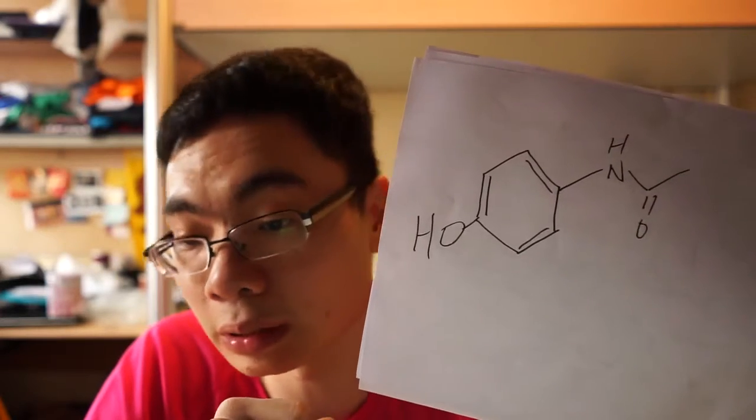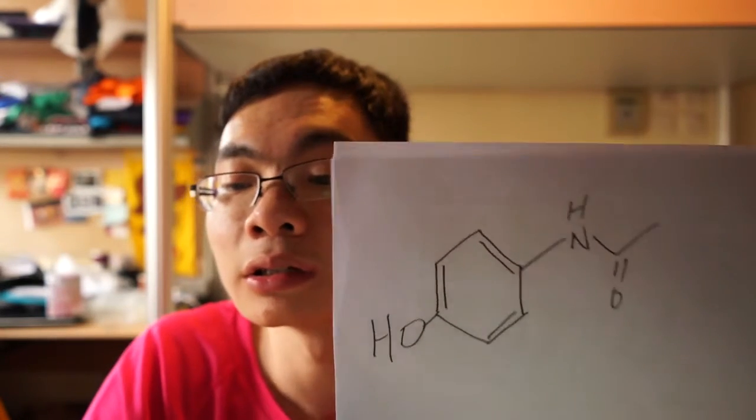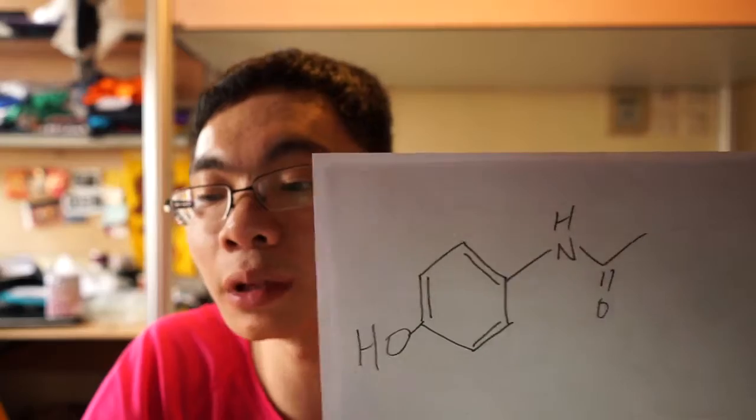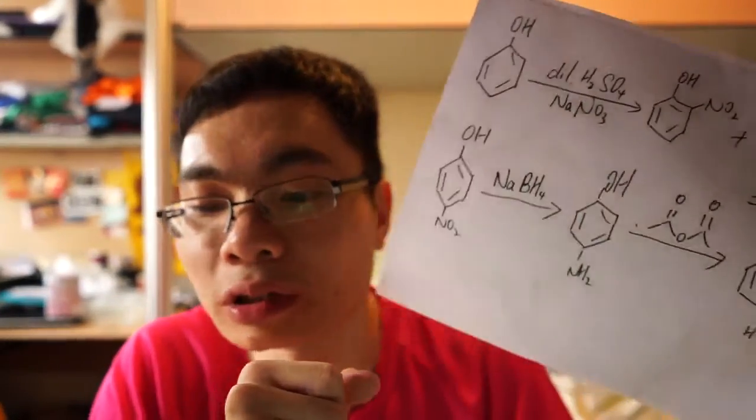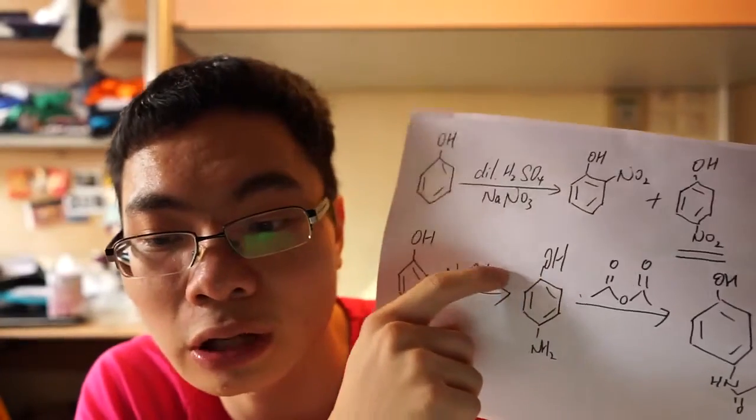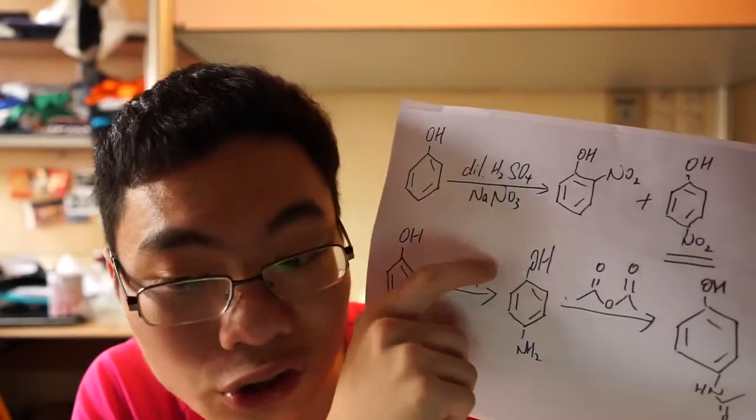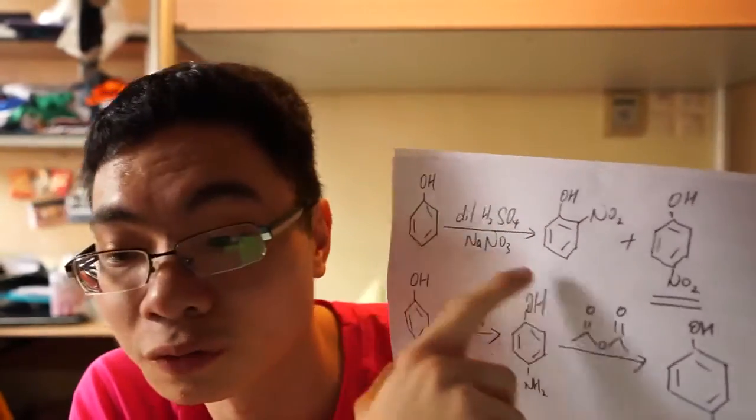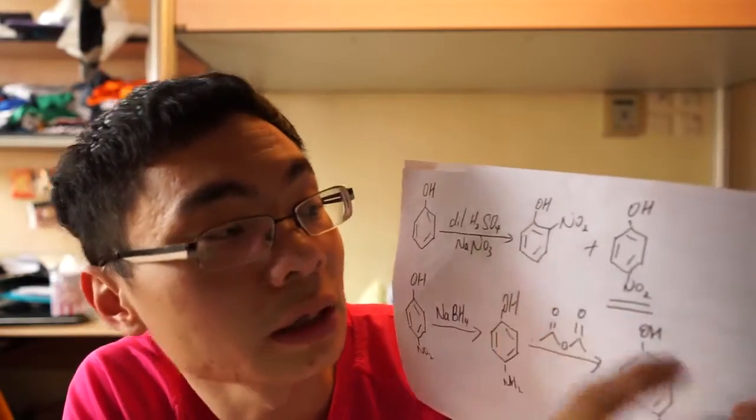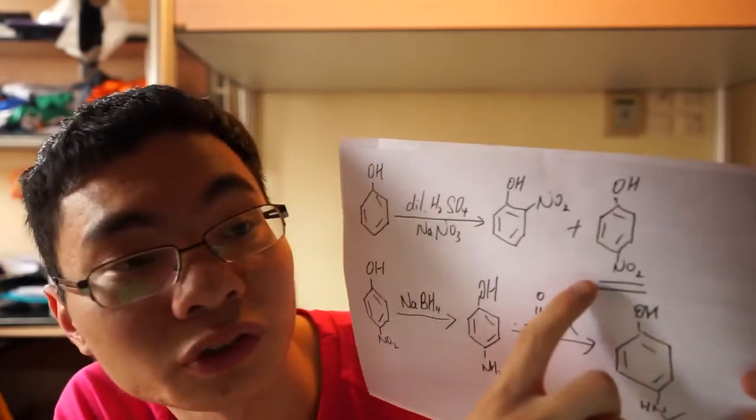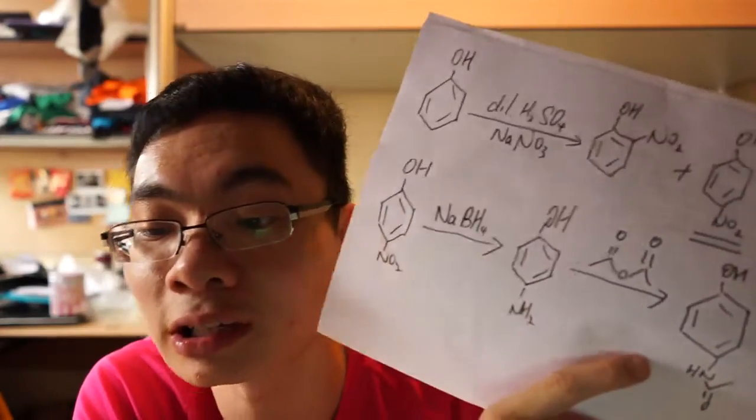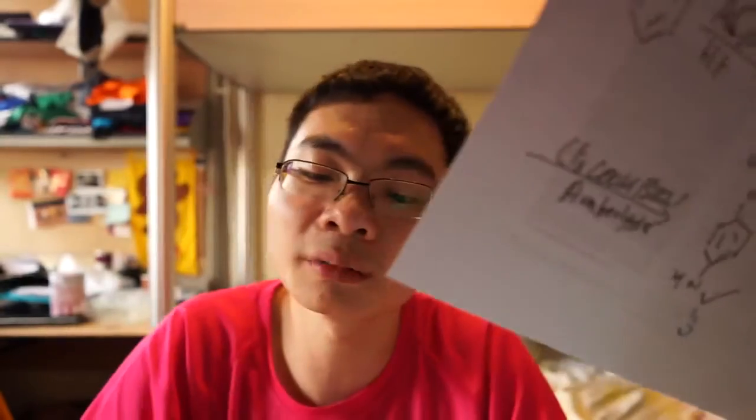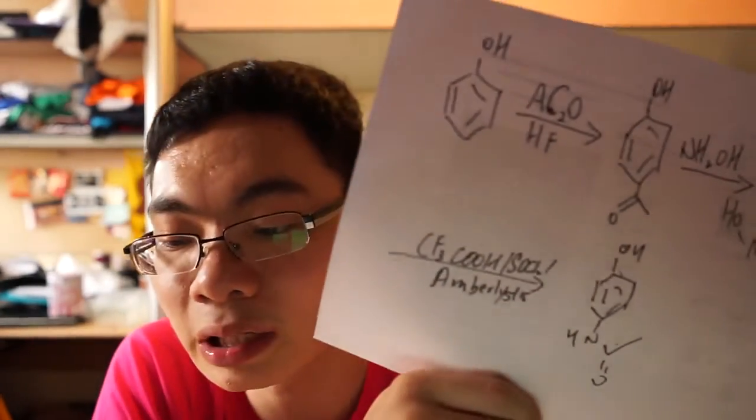There are two main synthesis pathways. One is the original method which includes the nitration of phenol to form two isomers. This is then used for further reaction to form our wanted product, Acetaminophen.